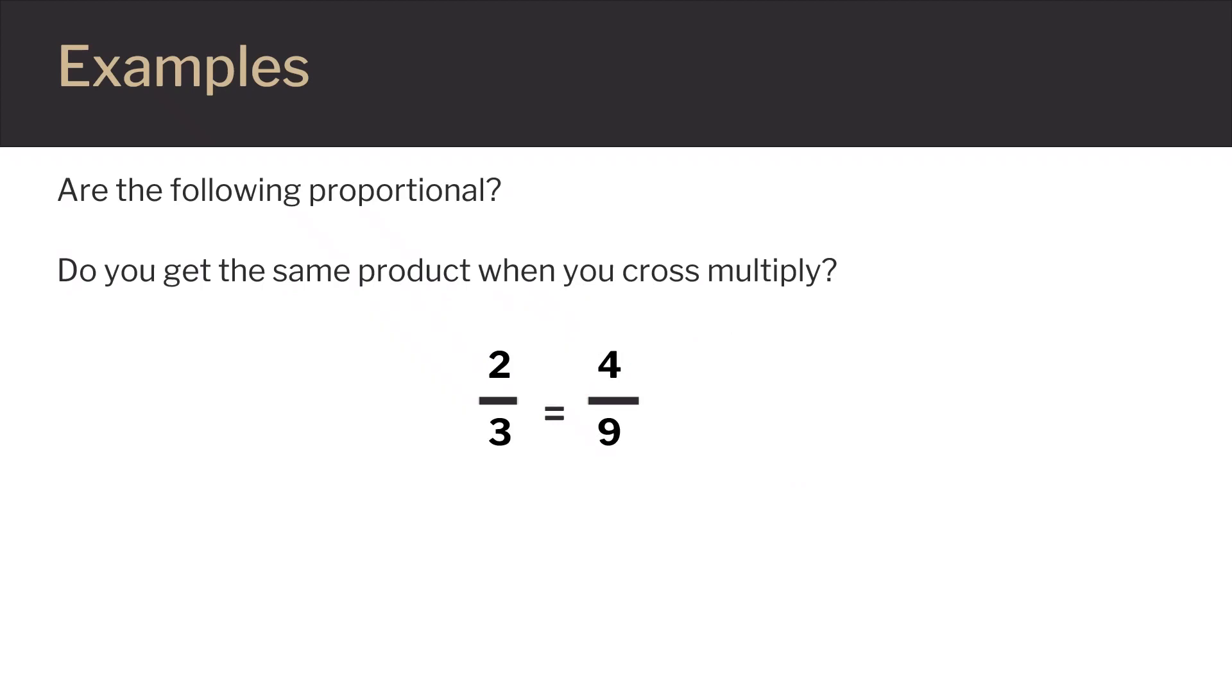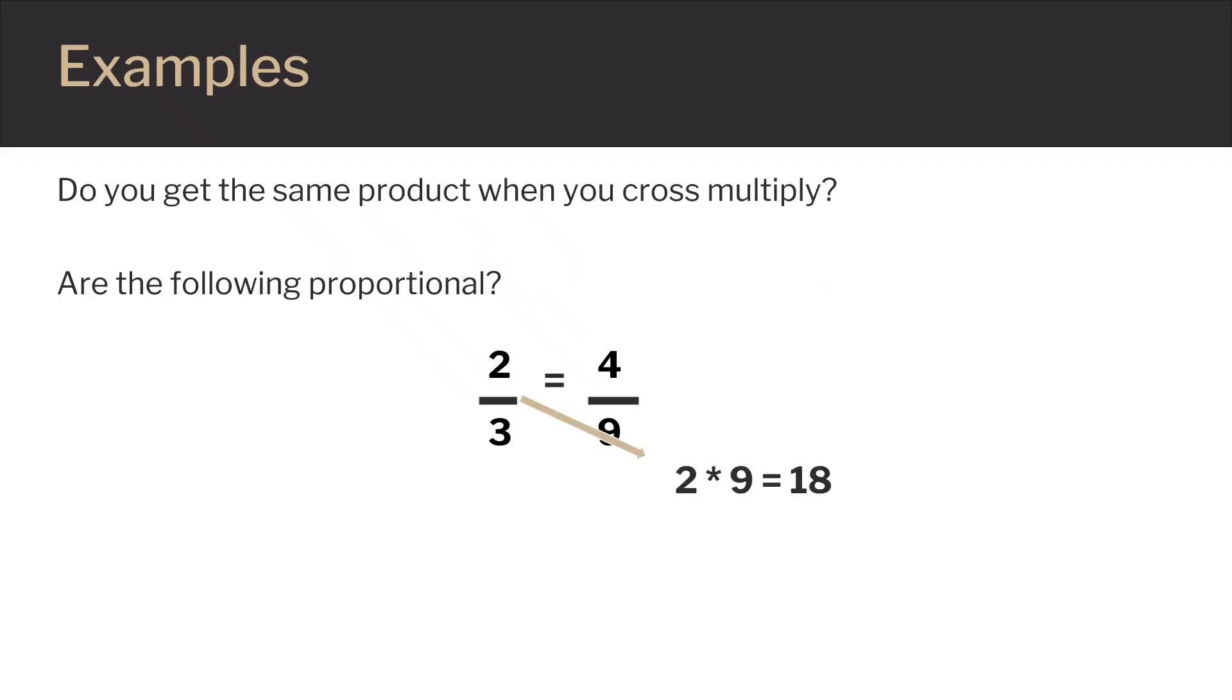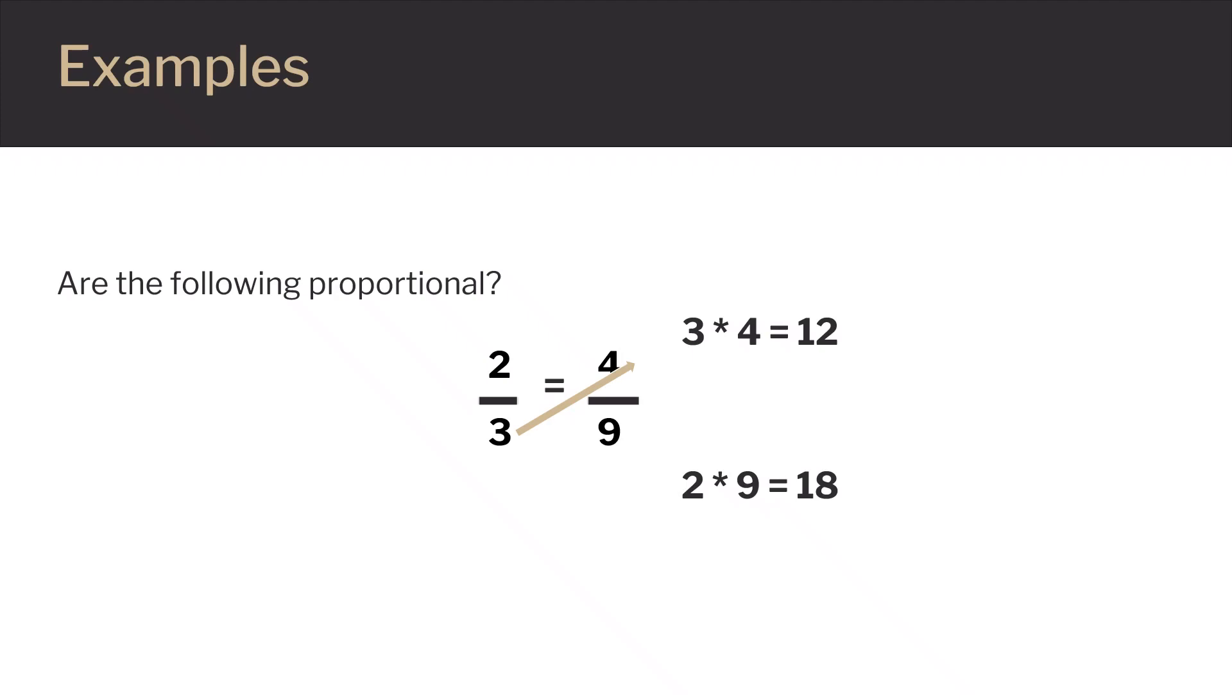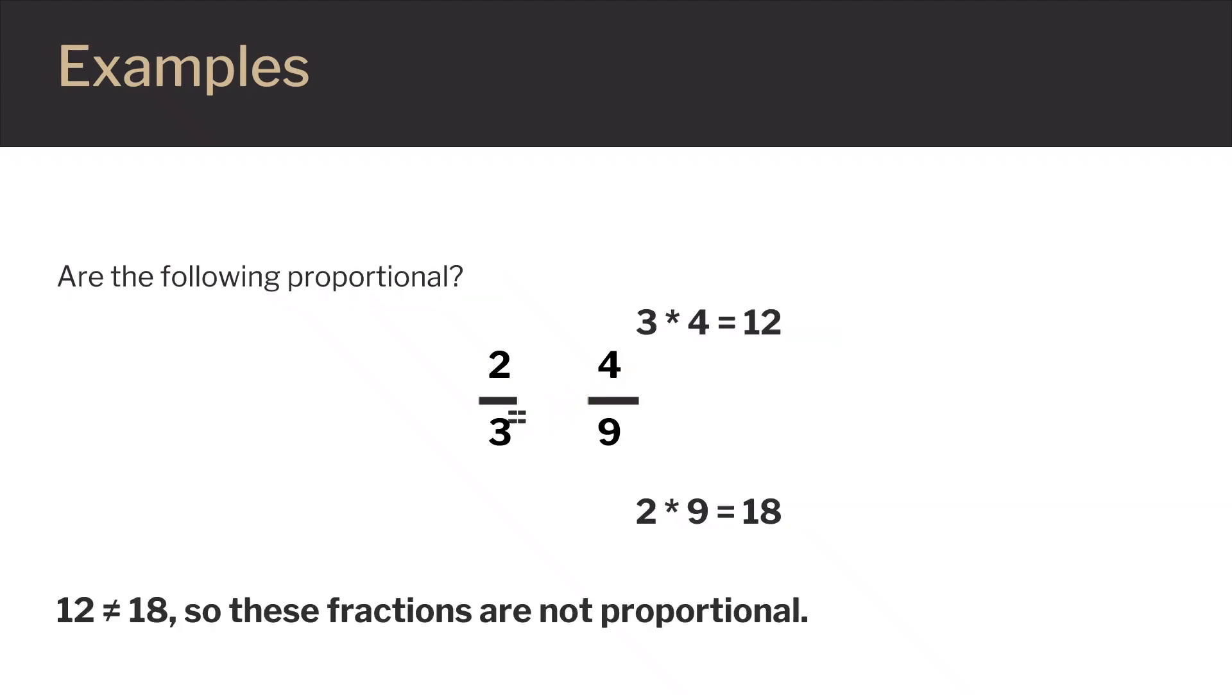Here is another example. We want to check if two-thirds is proportional to four-ninths. Again we'll cross multiply and compare the results. Start by multiplying the top left by the bottom right which gives us two times nine or eighteen. Now we multiply the other diagonal which gives us three times four which is twelve. Notice that eighteen and twelve are not equal so these fractions are not proportional.